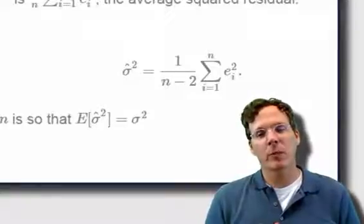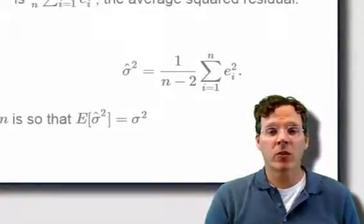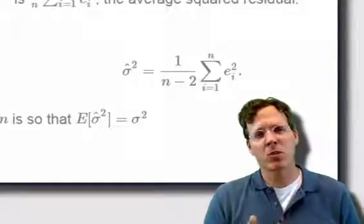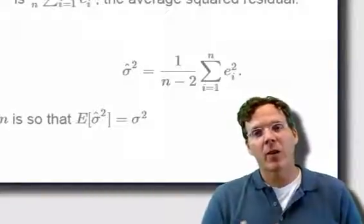The way to think about that is, remember, if we include the intercept, the residuals have to sum to zero. So that puts a constraint. If you know n minus 1 of them, then you know the nth.